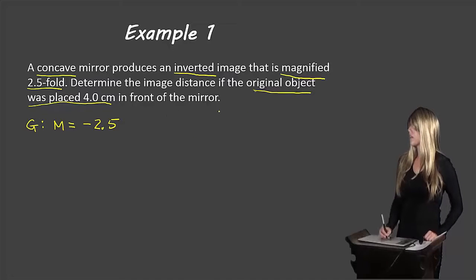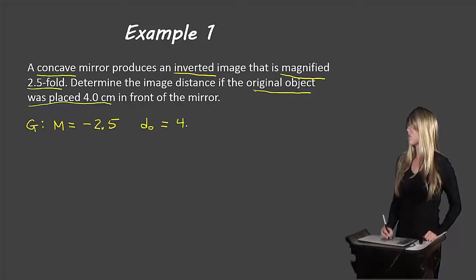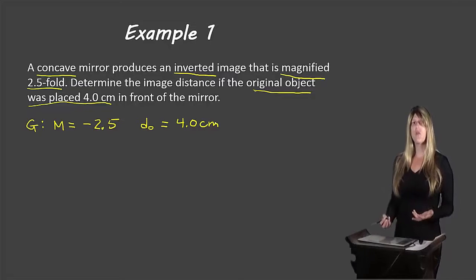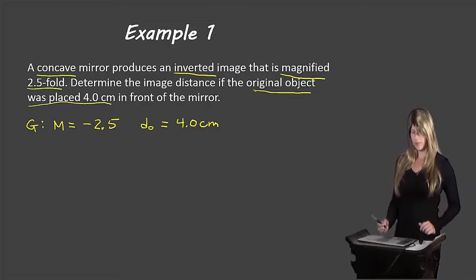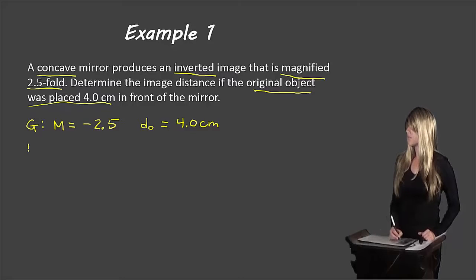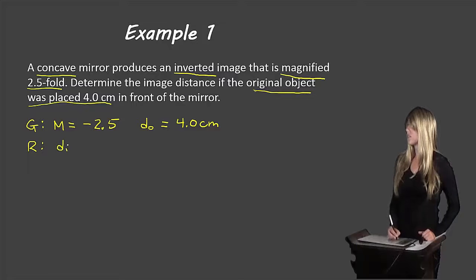The next part: the original object was placed 4.0 centimeters in front of the mirror, so the object distance DO is 4.0 centimeters. Object distances are always positive, so we leave it as positive 4.0. And for required, the question asks us to determine the image distance DI.